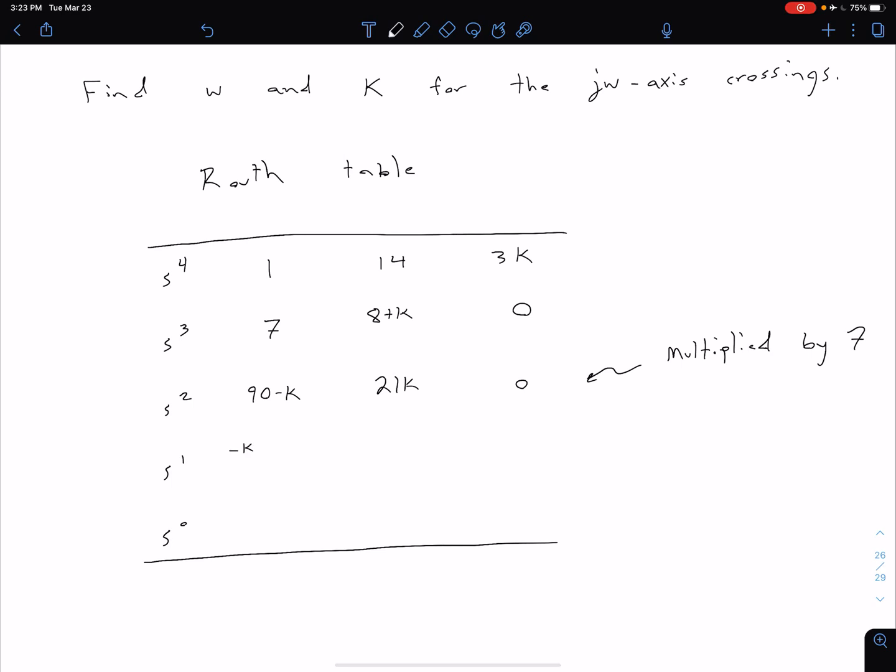Then in our s to the first row, what we're going to get is negative K squared minus 65K plus 720, all of that divided by 90 minus K, zero, zero. And then finally, in this last row, we have 21K, zero, and zero.